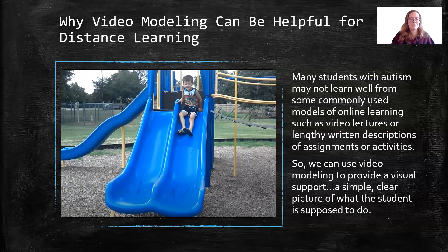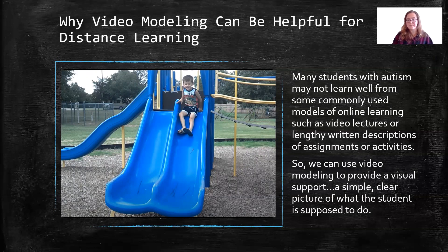Here's a video clip — I probably won't play it — but it shows my son going down a slide. It's very zoomed in on just the slide, so it's very clear on exactly what behavior he's doing. That's an example of how we can make it short, simple, to the point, and clear in any video that we're showing.